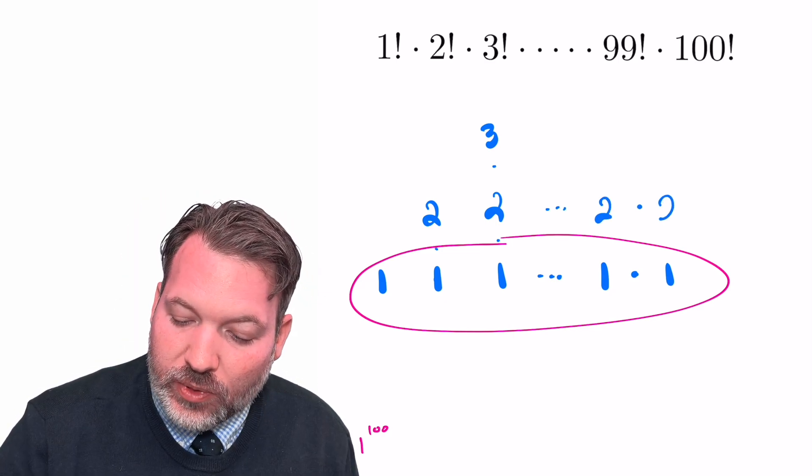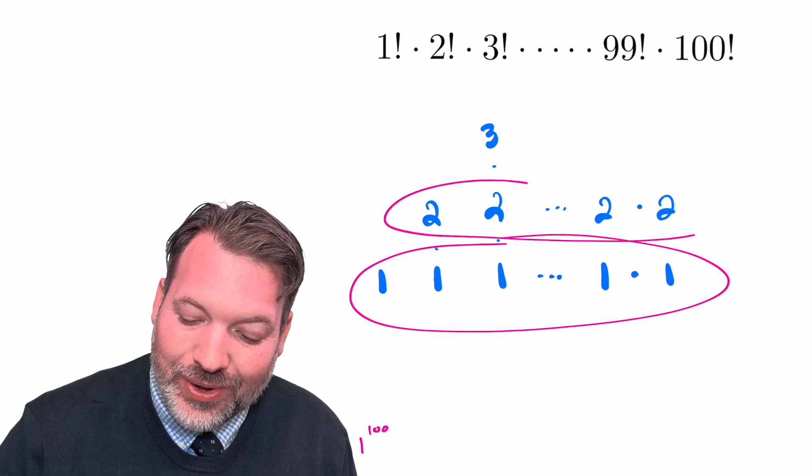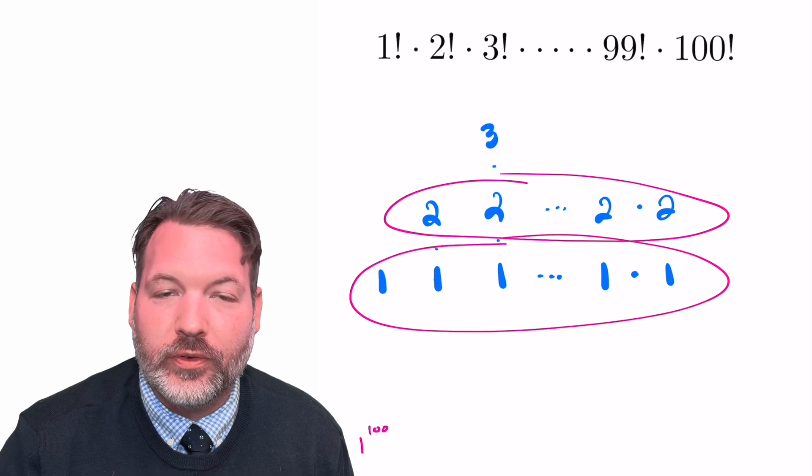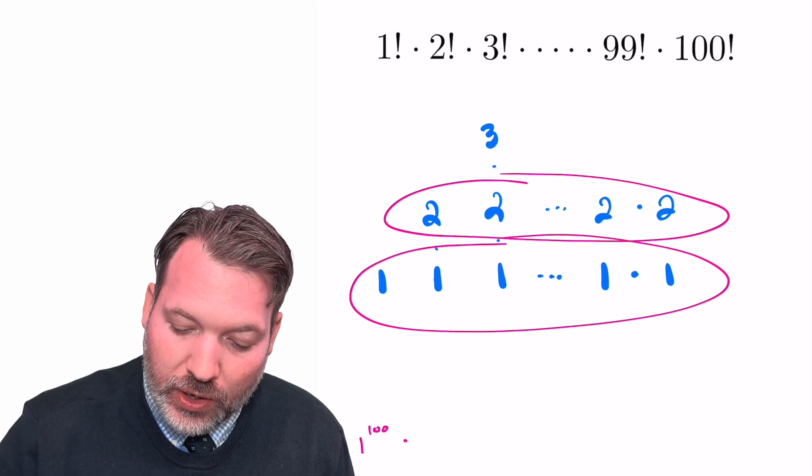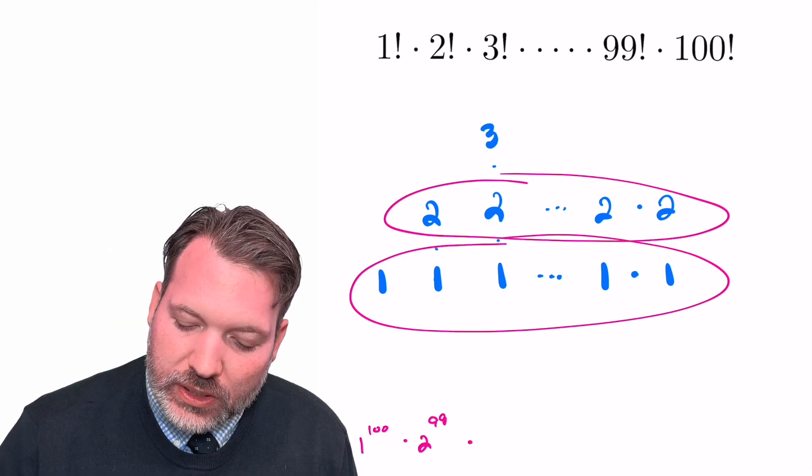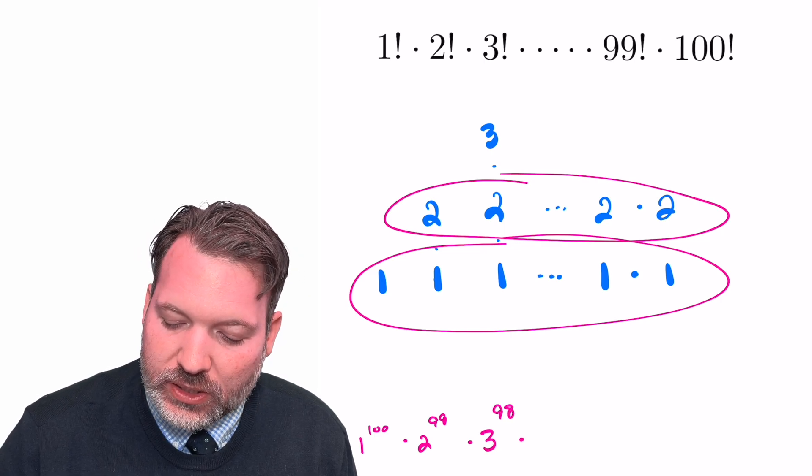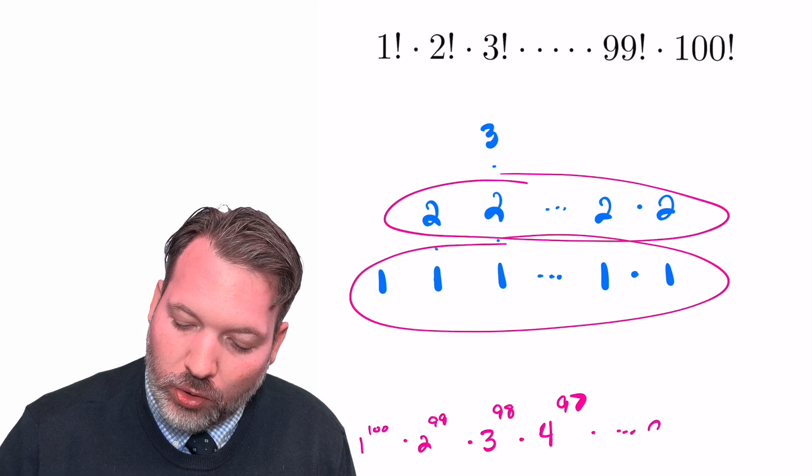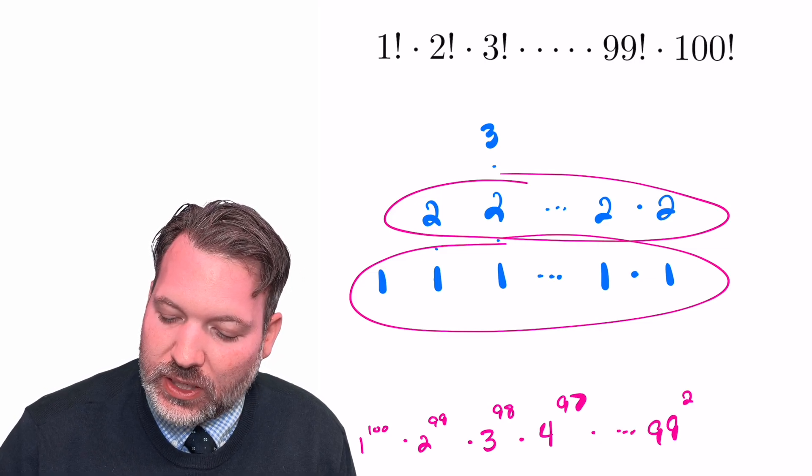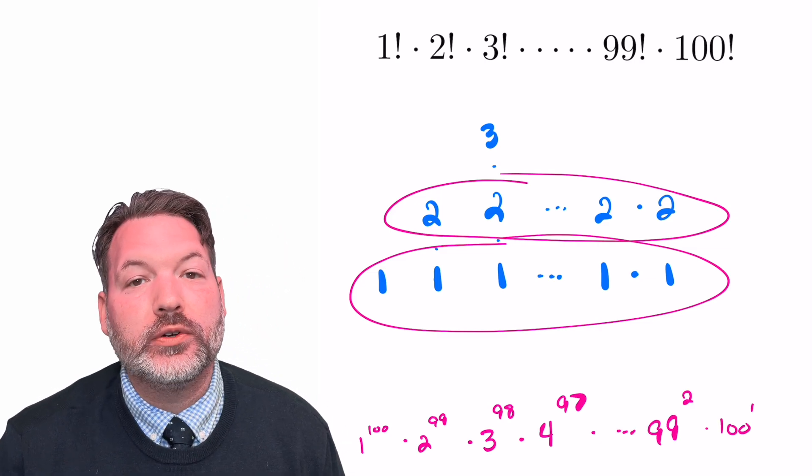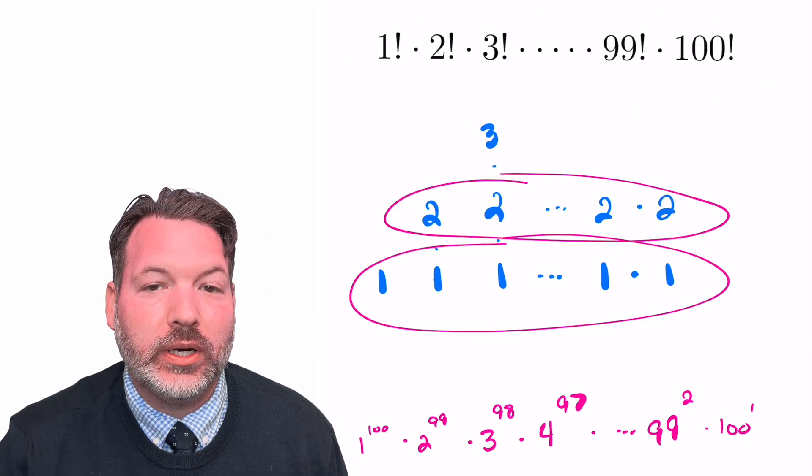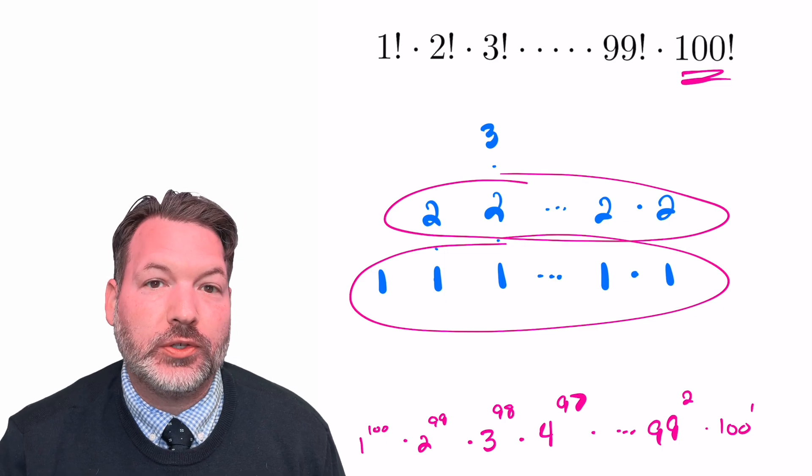Similarly, if we do the same thing for 2, we would have a 2, but this time to the 99th power because 1 factorial itself did not have a 2. So we also need to multiply it by 2 to the 99th. You can tell this is also going to have 3 to the 98th, and 4 to the 97th, and so on, all the way down to 99 to the 2nd times 100 to the 1st. This giant factorial product only has a single 100 in it coming from the 100 factorial itself.